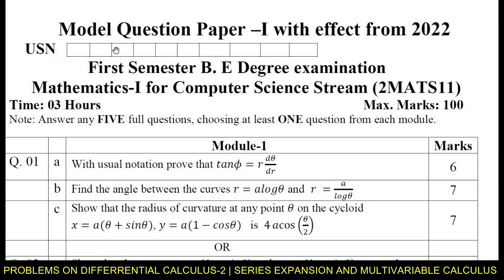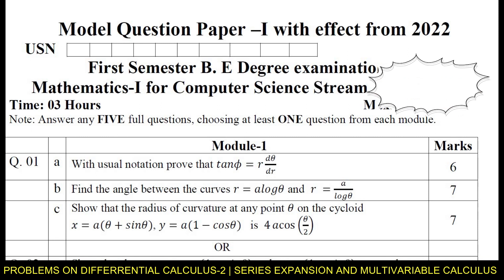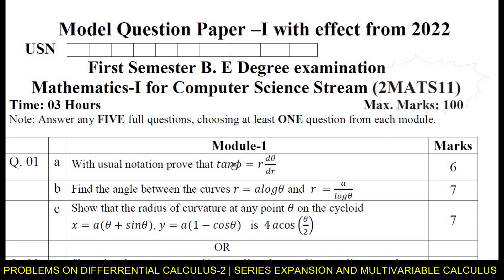Hello everyone. I welcome you all to SVK Tutorials. In this session, I will be discussing the solution for Model Question Paper 1, which has been in effect from 2022 for the first semester BE degree examination, for the subject Mathematics for Computer Science Stream 1 with subject code BMATS101. As discussed in the previous video, Module 1 was covered. In this video, I am going to discuss the solution for Module 2.